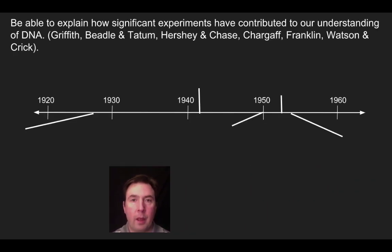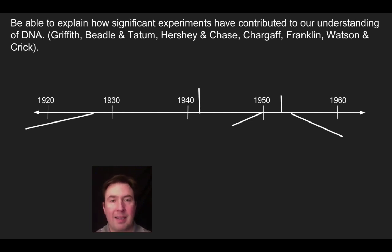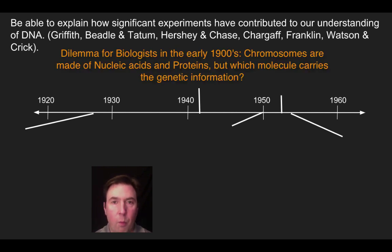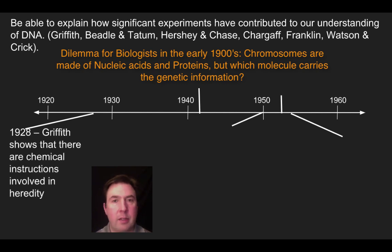Let's first talk about the process of how a series of experiments led to our understanding of the structure of DNA. Mendel does his work in the mid-1800s and it doesn't have much of an impact, but during the late 1800s the discovery of chromosomes occurs. In the early 1900s there is a lot of discussion about chromosomes and what possibly is passing on information from one generation to the next. This leads to a controversy about what factor actually causes genes to be passed on, and one of the first experiments that shed light on this was the work of Griffith.